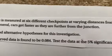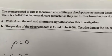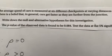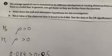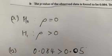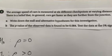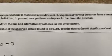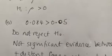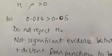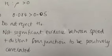Question 5: The average speed of cars is measured at six different checkpoints at varying distances from a junction. There is a belief that cars get faster further from the junction — that's positive correlation. Null hypothesis: rho equals zero. Alternative hypothesis: rho is greater than zero — one-tailed. The p-value is 0.084, about 8.4 percent. Testing at the five percent level, 8.4 percent is greater than five percent, so we do not reject the null. There is not sufficient evidence that speed and distance from the junction are positively correlated.